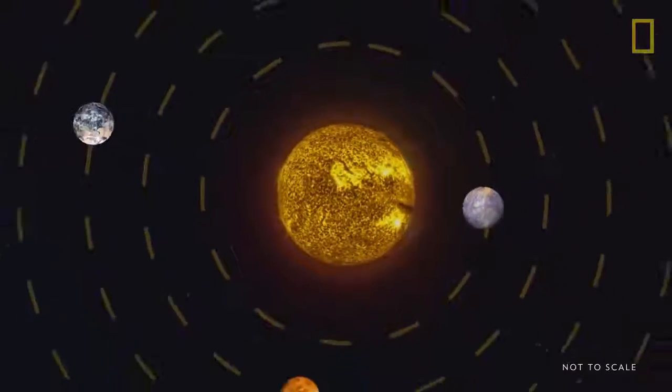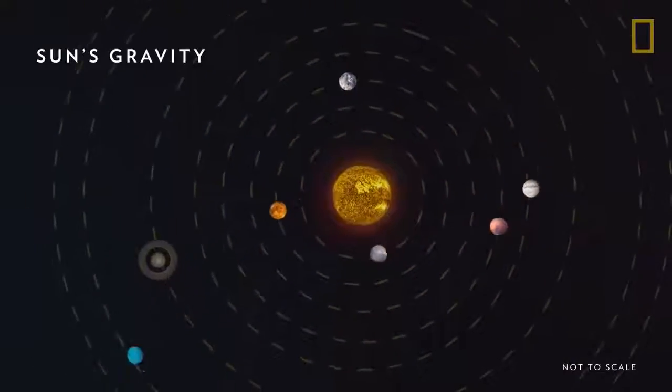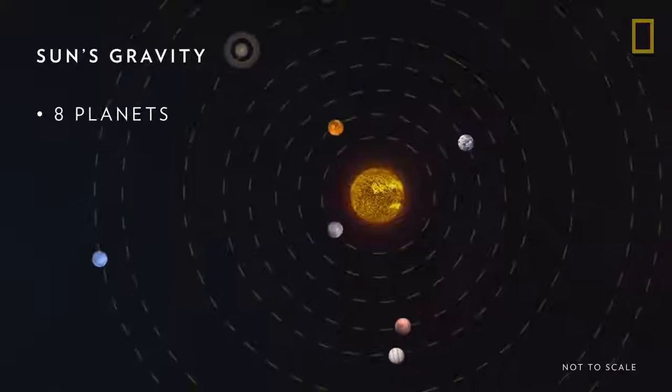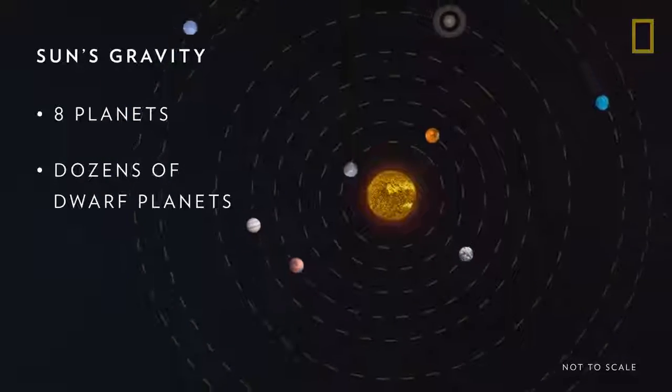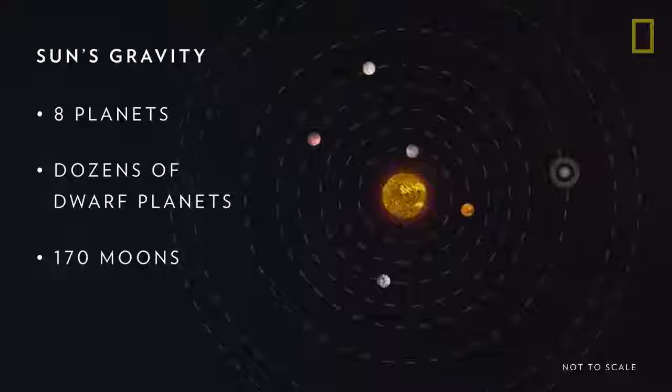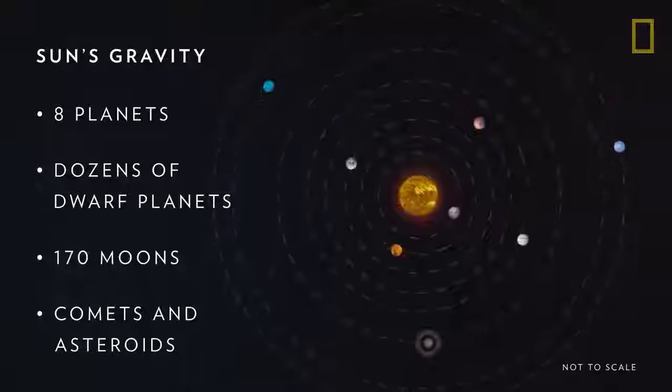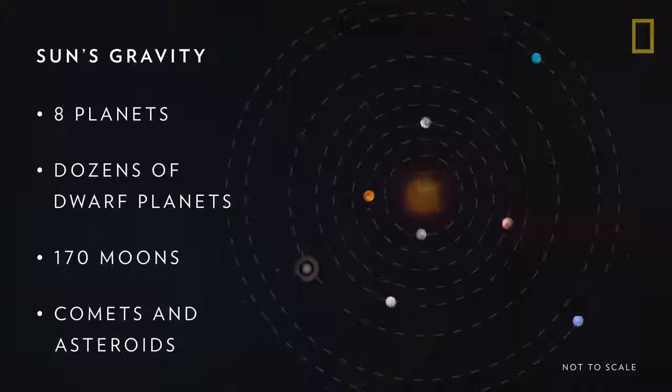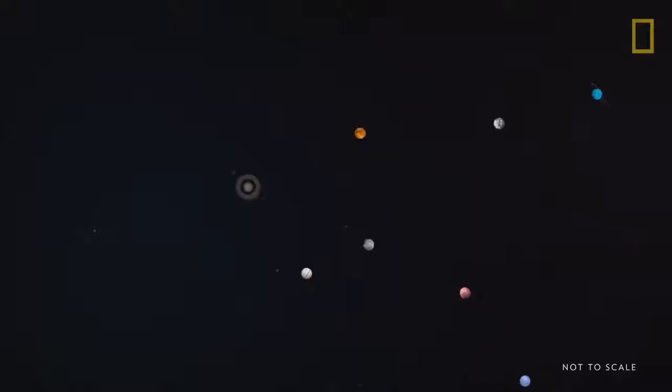This gravitational pull allows the Sun to hold together a system of eight planets, potentially dozens of dwarf planets, at least 170 moons, and countless comets and asteroids. Without the Sun's gravity, these celestial bodies would drift off into deep space.